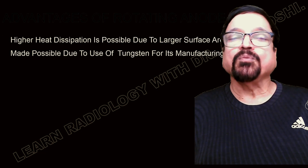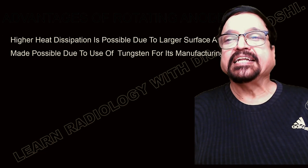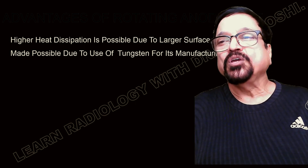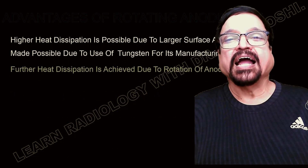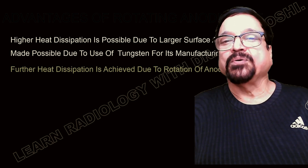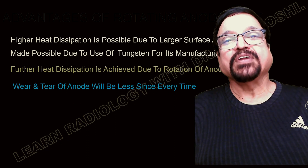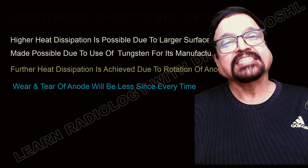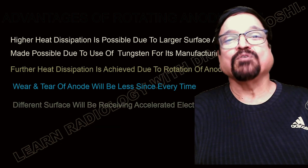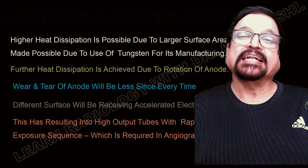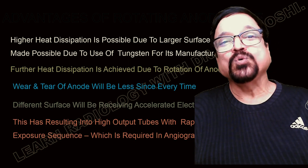The advantages of the rotating anode tube: higher heat dissipation is possible due to the larger surface area, made possible by the use of tungsten for its manufacturing, which has high heat dissipation capacity and a high melting point, making it an ideal material for the anode. Due to rotation, a different surface is exposed every time, further facilitating heat dissipation. Wear of the anode is also less since the focal spot changes every 1/60th of a second. However, it is bulky and cannot be used in a dental unit.